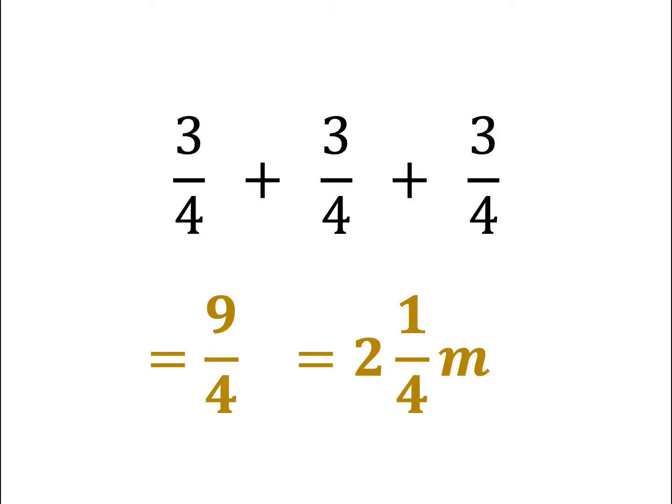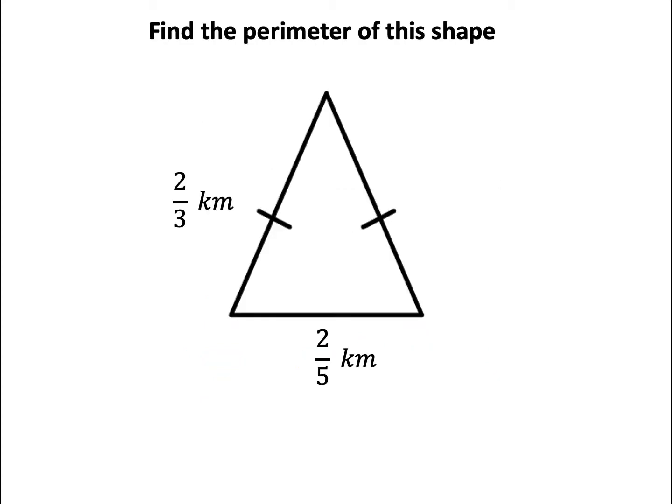Let's have a think about this question. How do we find the missing length? We first have to identify what shape we have. This shape is an isosceles triangle. We know this as we have two dashes indicating these two sides are equal to each other. So this length is 2 thirds also. Now we know all three lengths, we can calculate the perimeter of this shape.